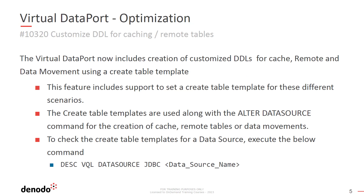Virtual Dataport now allows users to create customized DDLs for cache, remote, and data using a CREATE TABLE template with the ALTER DATA SOURCE command. This template is used to create tables for data movements, cache, managing the cache, and remote tables. If the ALTER DATA SOURCE command does not include the CREATE_TABLE_TEMPLATES token, the VDP server will keep the current values for the templates. If the command includes an empty CREATE_TABLE_TEMPLATE section, the VDP server will remove all the data source templates and the section will not appear in the DATA SOURCE VQL.